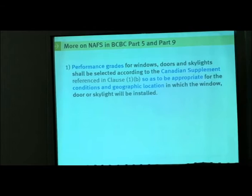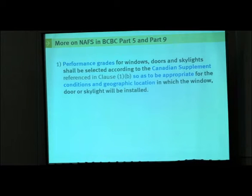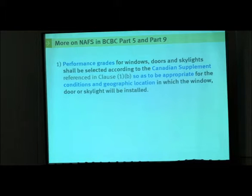The building code tells us to use NAFs together with this Canadian supplement in Part 9 and in Part 5. It clearly states in both Parts that performance grades for windows, doors, and skylights shall be selected according to the Canadian supplement so as to be appropriate for the conditions and geographic location in which the window, door, or skylight will be installed.